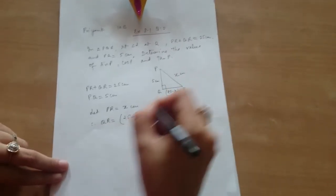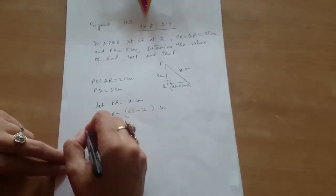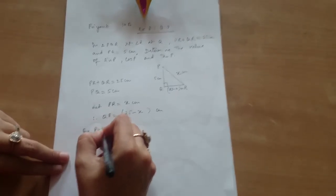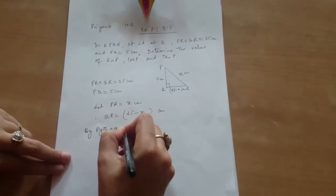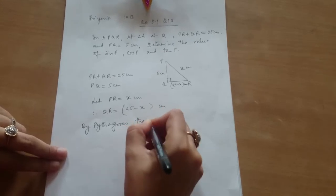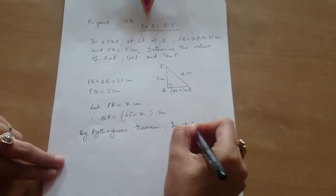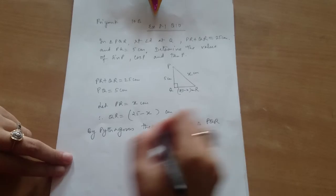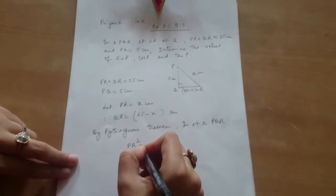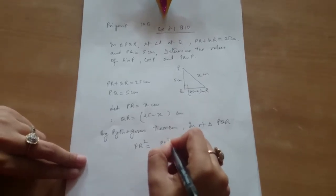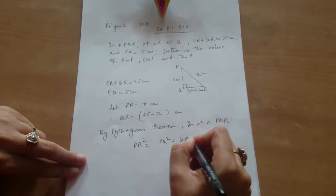Ok, by applying Pythagoras theorem. By Pythagoras theorem, in right triangle PQR, PR square equals to PQ square plus QR square.